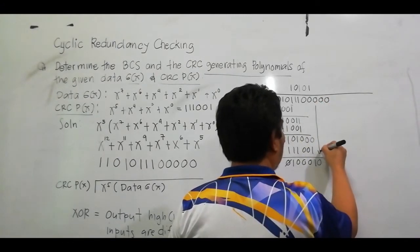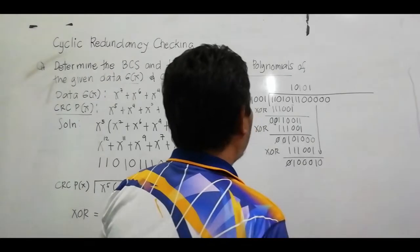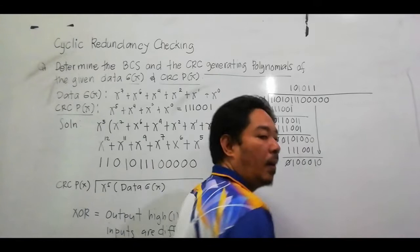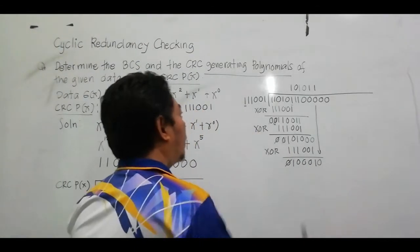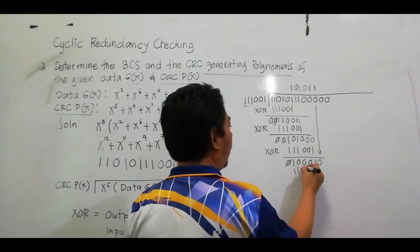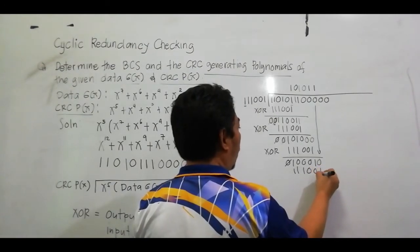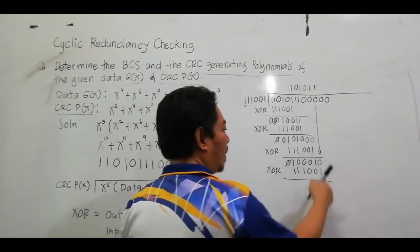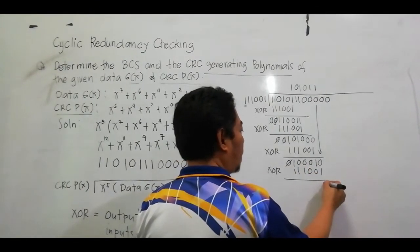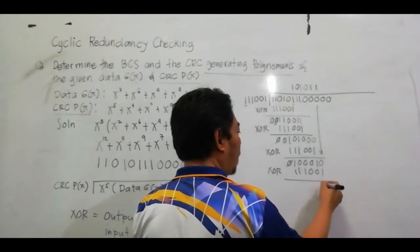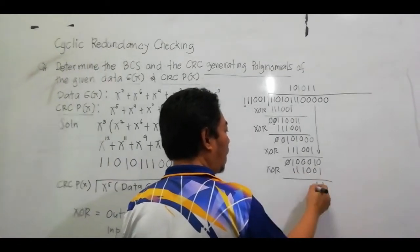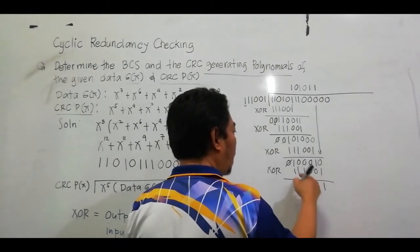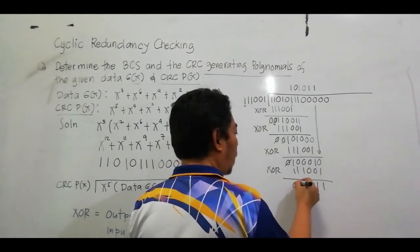XOR again: 0,1=1; 1,0=1; 0,0=0; 1,0=1; 1,1=0; 1,1=0. Cancel out this 0 and bring down another 0. Most significant bit is 1, so quotient is 1. Multiply: 1 1 1 0 0 1. XOR: 0,1=1; 1,1=0; 1,0=1; 1,0=1; 1,1=0.